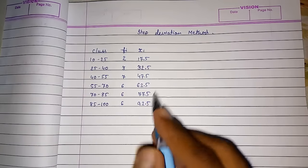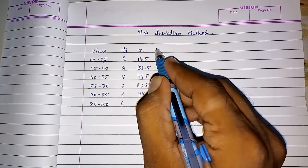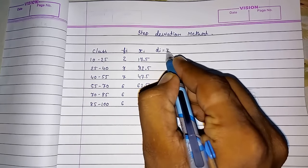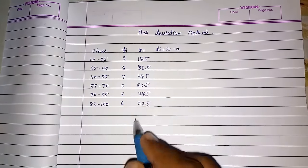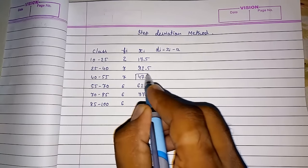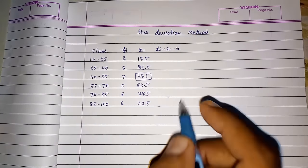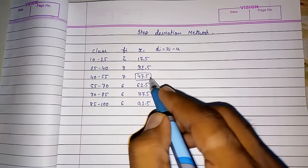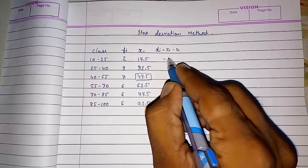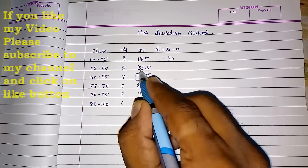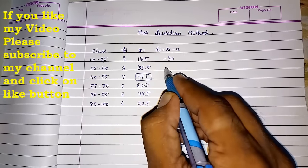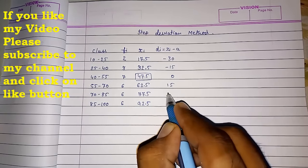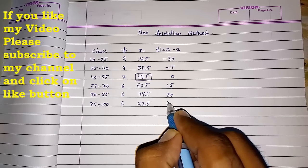These numbers are very big. So we are finding di. Di means xi minus a. We are generally assuming the middle term is a. I am assuming this a. So I think we will get bigger number 17.5 minus 47.5. It's minus 30. Then 32.5 minus 47.5. Minus 15. Zero. Then 15. 30. And 45.